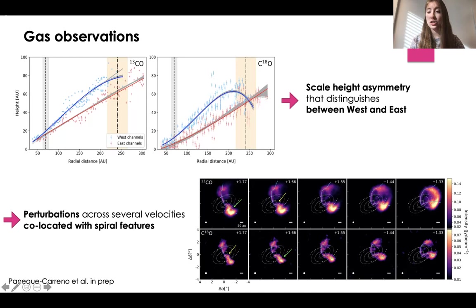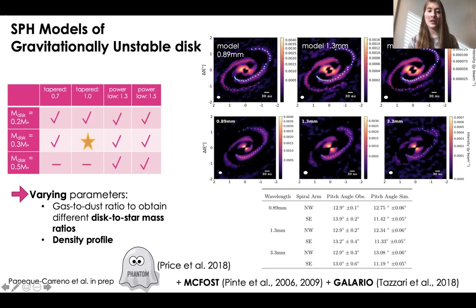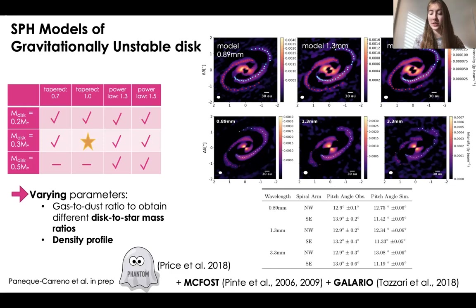With this in mind, we decided to conduct some GI modeling using SPH models — smooth particle hydrodynamical models conducted using the PHANTOM code by Daniel Price — and afterwards processed using the radiative transfer code MCFOST, developed by Christophe Pinte. The creation of the mock-ALMA images was done with the help of the GALARIO code, developed by Marco Tassari. This is done so that we can accurately compare the SPH models to the observations at the three different wavelengths.